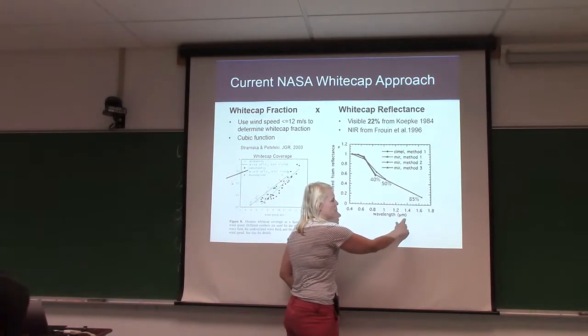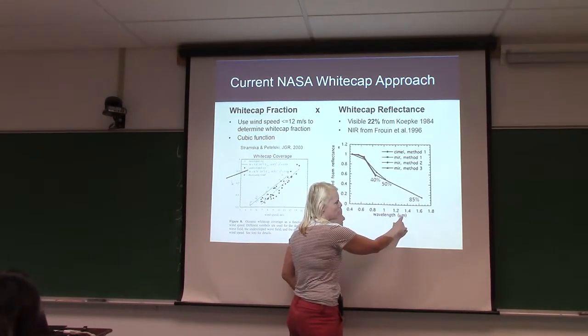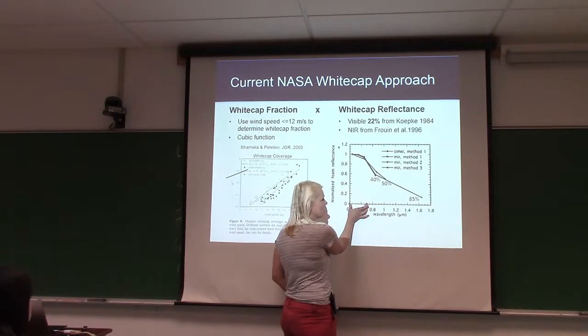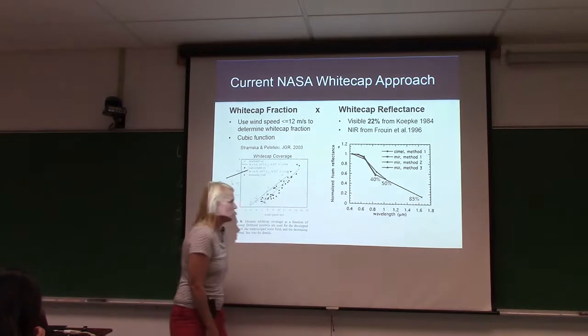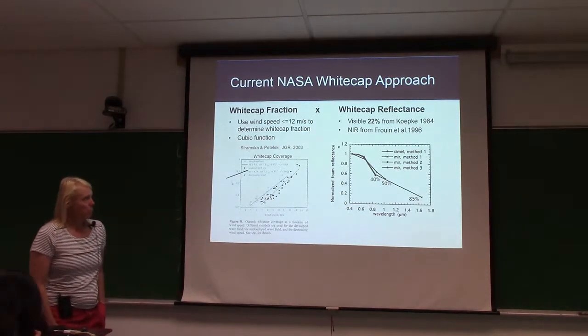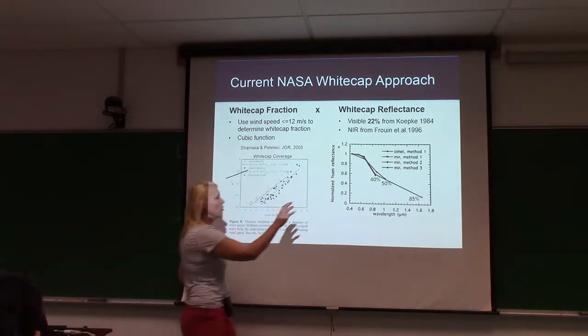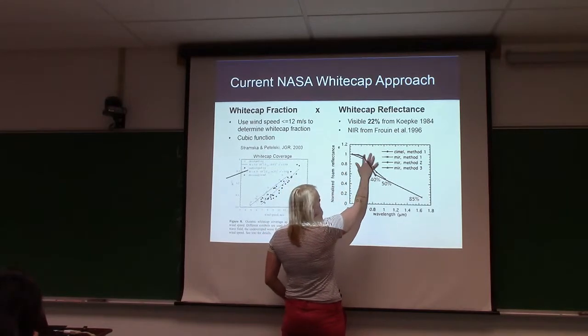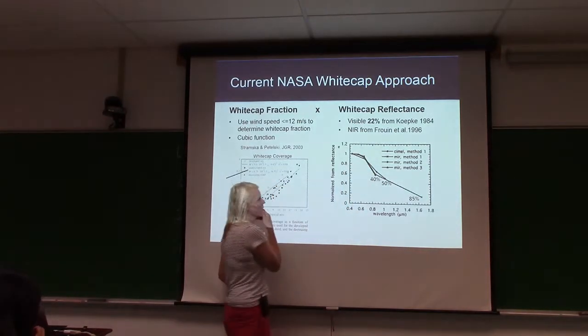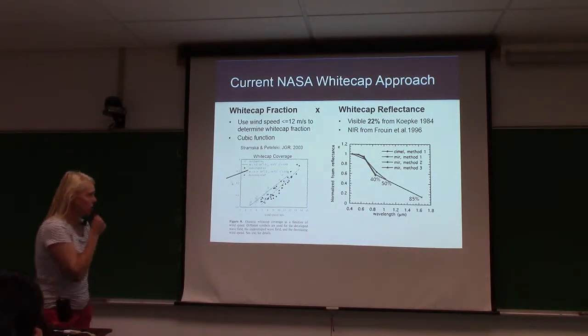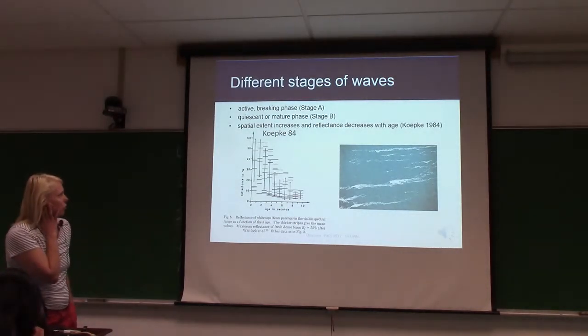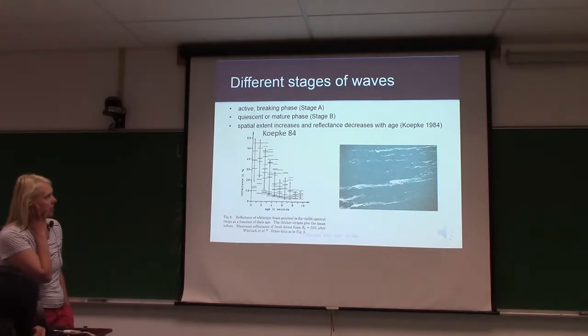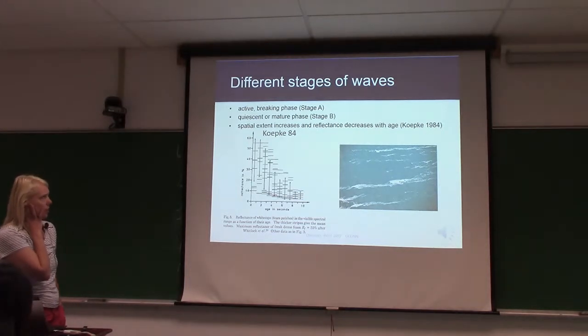So what about the white cap reflectance? Are all white caps 22% and then decaying into the near infrared. So this is wavelength. But as you might see in some of my plots, there are microns. So this is the visible, and then this is the near infrared, and then going out into the short wave. So over the visible, you know, they're sort of flat, but then they decay.